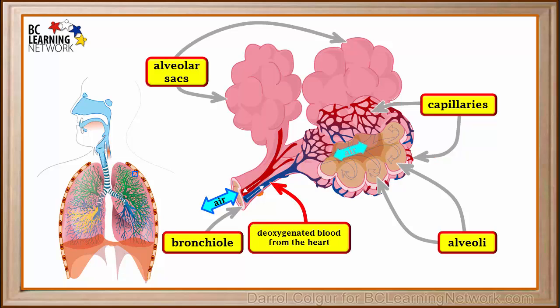The blood vessels colored blue are carrying deoxygenated blood from the heart. As this blood goes through the capillary beds, it gradually absorbs oxygen from the alveoli and becomes red. These vessels carry red or oxygenated blood back to the heart.